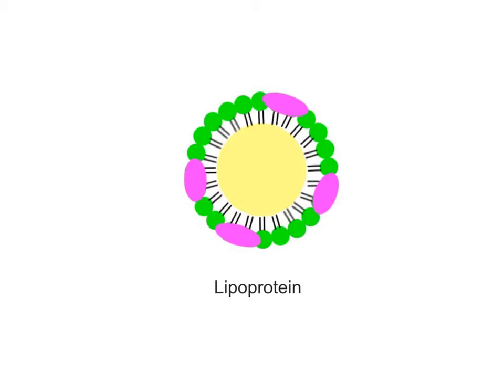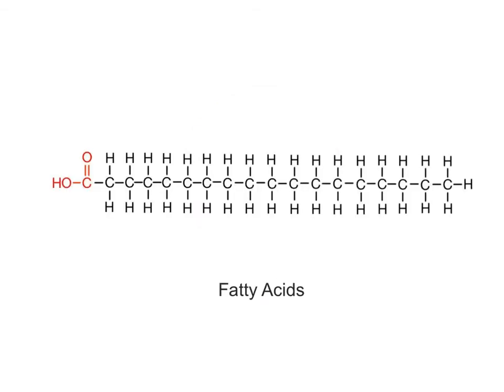Now let's review some characteristics of these different types of lipids. The fatty acids are simple lipids that are used to synthesize other lipids, such as triglycerides and phospholipids. Fatty acids are also catabolized, or broken down, in order to manufacture ATP for cellular energy.